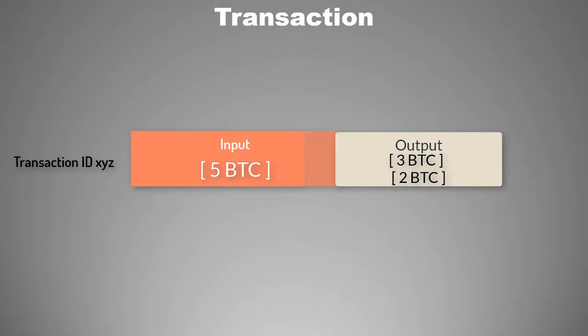So this locking script will tell the Bitcoin system that these three Bitcoins now belong to Bob's address and two Bitcoins bind to Tom's address.